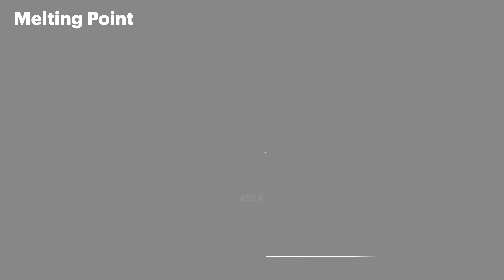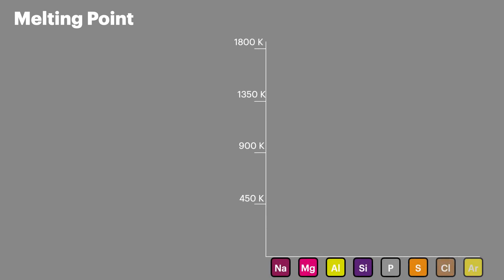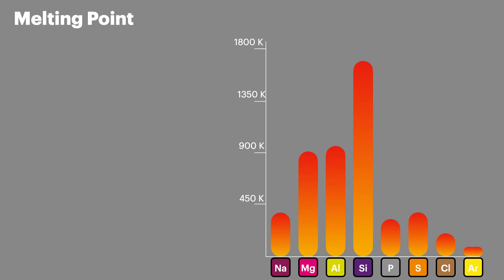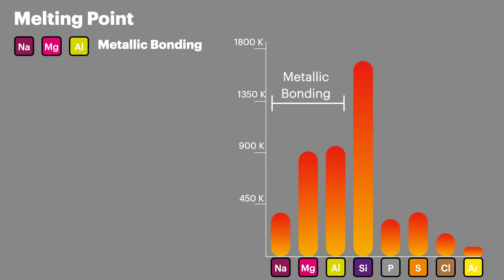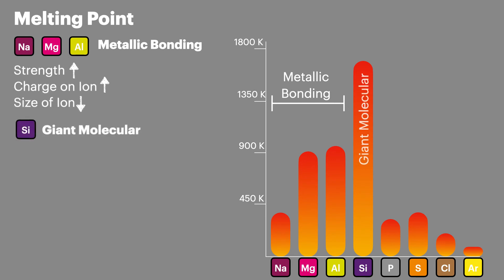Looking at the melting points, we'll start by plotting the data of the period 3 elements and then split it into 3 types of structure. The first structure containing sodium, magnesium and aluminium — they're all metallically bonded. The strength of a metallic bond depends on the charge of the ion and the size of the ion. In the second group containing just silicon, which has a giant molecular structure made up of strong covalent bonds, and this gives it a really high melting point.